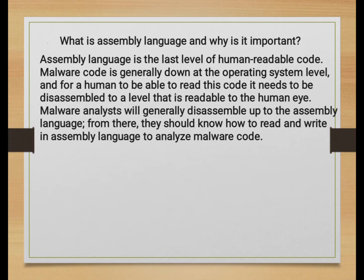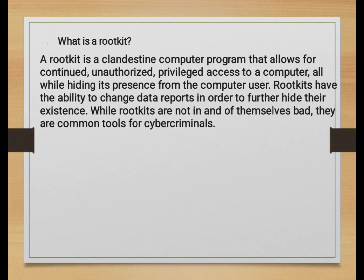What is assembly language and why is it important? Assembly language is the lowest level of human-readable code. Malware code generally operates at the operating system level, and for a human to read this code it needs to be disassembled to a level readable to the human eye. Malware analysts will generally disassemble code up to the assembly language level, and from there they should know how to read and write in assembly language to analyze the malware code.